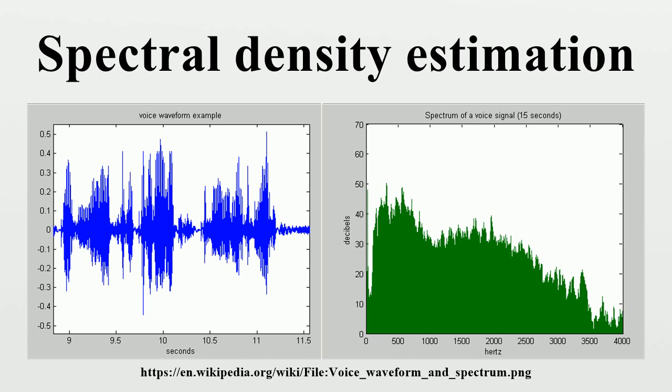Welch's method - a windowed version of Bartlett's method that uses overlapping segments. Multitaper is a periodogram-based method that uses multiple tapers or windows to form independent estimates of the spectral density to reduce variance of the spectral density estimate.